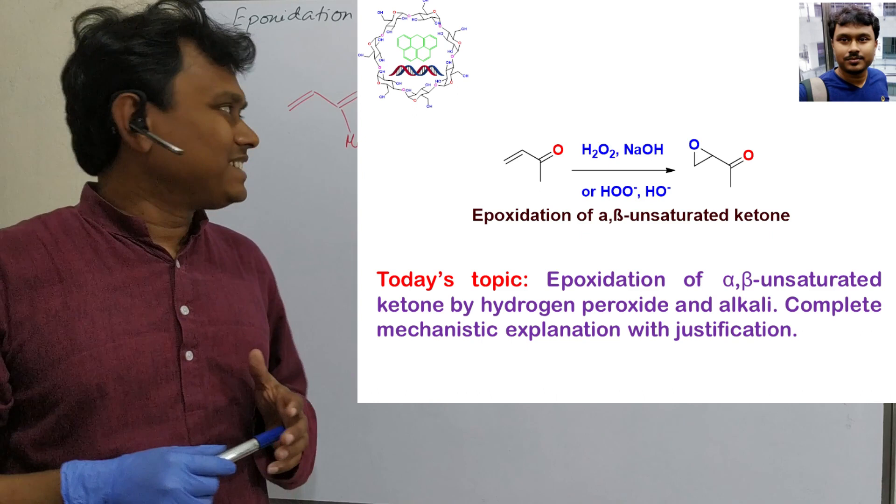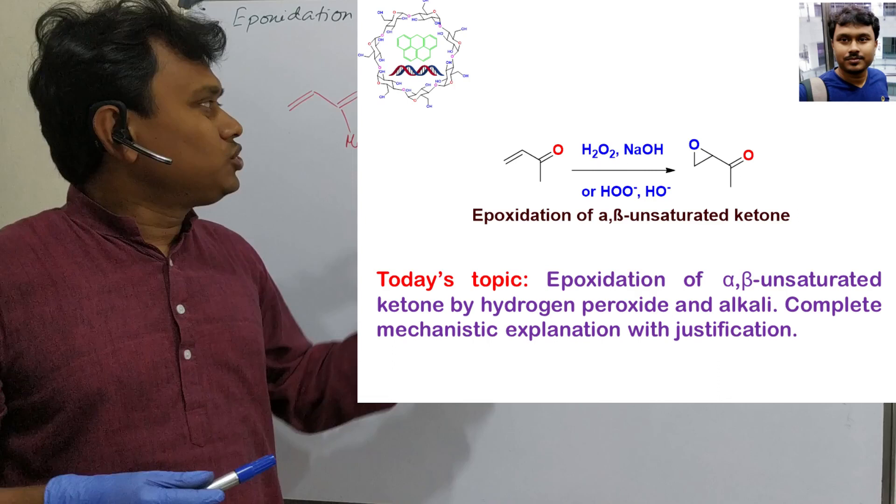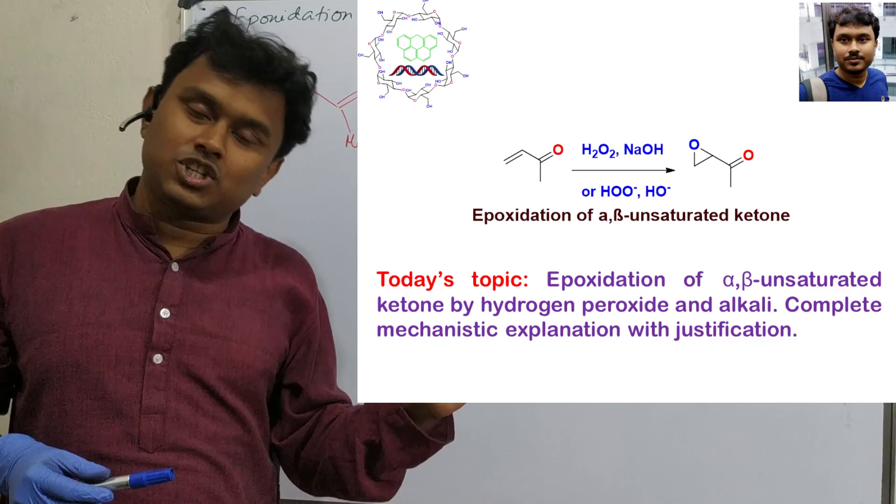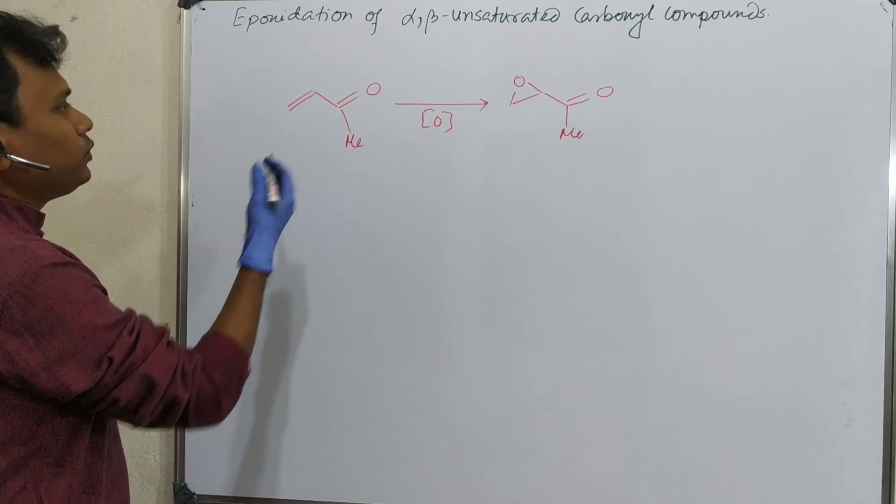Today we will discuss a very short topic: epoxidation of alpha-beta unsaturated carbonyl compounds. In the previous lecture I described epoxidation of simple alkenes. But there is a problem with epoxidation of alpha-beta unsaturated carbonyl compounds using MCPBA. So we will discuss what is the problem and how to overcome it.